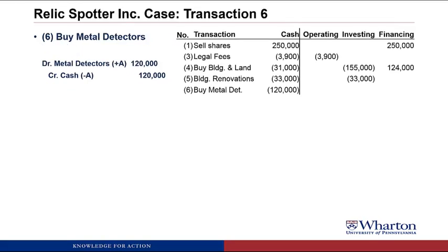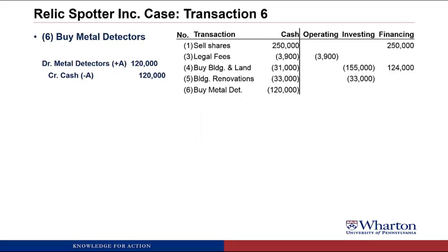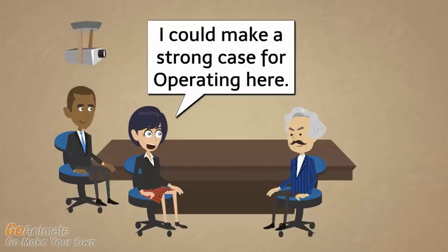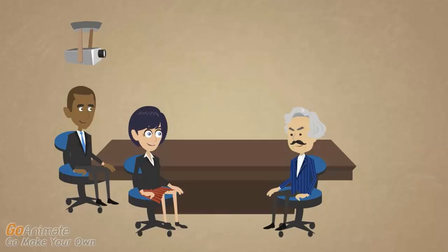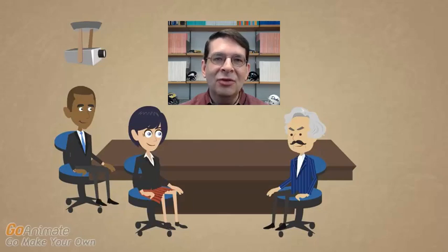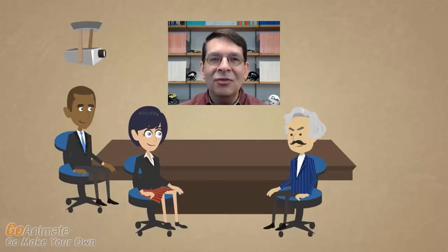Transaction number six: Relic Spotter paid $120,000 cash to buy metal detectors. The answer is a $120,000 investing cash outflow. Our core business is renting metal detectors, but we're going to rent these over and over for up to two years, which makes them more like equipment — a long-term asset — making the investing cash flow treatment more appropriate. If we were buying them to immediately resell like inventory, or renting them for less than a year, we would call it operating.